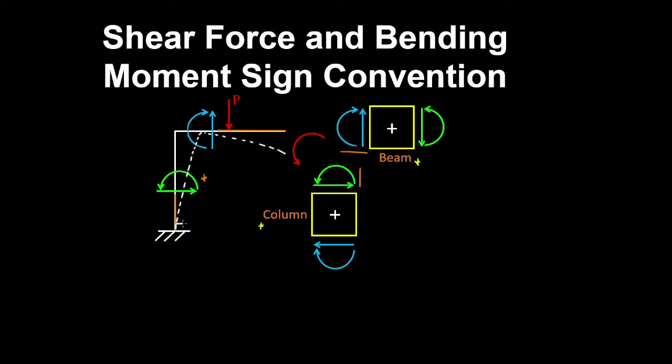Because we have a rigid support, so there's no rotation allowed at this joint, so the column behaves like a cantilever.